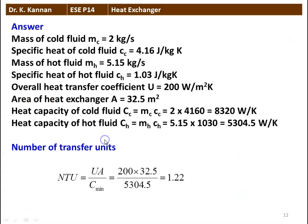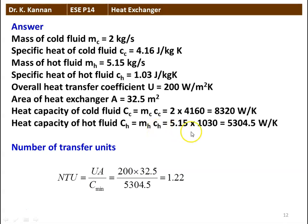We will see how in the next slide. Mass of cold fluid = 2 kg/s, specific heat of cold fluid = 4.16 kJ/kg·K, mass of hot fluid = 5.15 kg/s, specific heat of hot fluid = 1.03 kJ/kg·K, U = 200 W/m²·K, area = 32.5 m². Heat capacity of cold fluid: CC = 2 × 4160 = 8320 W/K. Heat capacity of hot fluid: CH = 5.15 × 1030 = 5304.5 W/K. NTU = UA / C_minimum = 200 × 32.5 / 5304.5 = 1.22. Number of transfer units = 1.22.